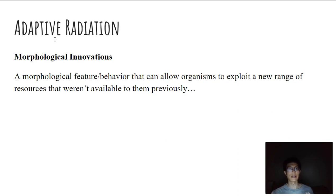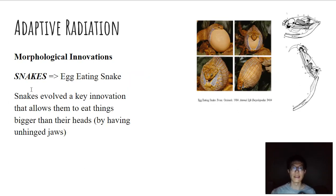So a morphological innovation is just a morphological feature or behavior that can allow certain organisms to exploit a new range of resources that weren't available to them previously. A very good example of this is with snakes. So snakes are really cool because they have jaws that unhinge. And this kinetic skull that allows them to unhinge their jaws allows them to eat things that are bigger than their heads.